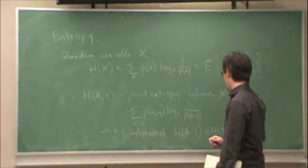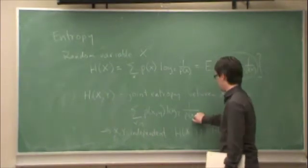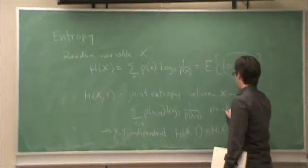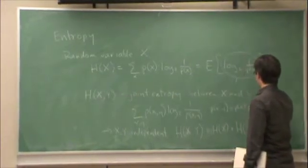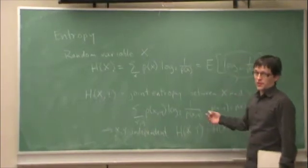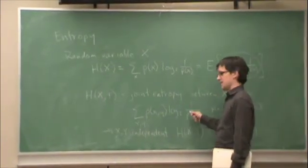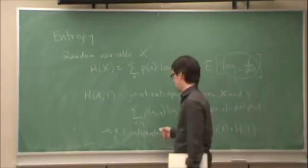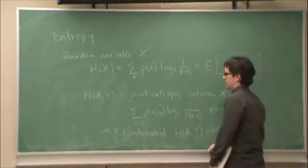So we showed that last time. It's not too hard to show yourself because p of x,y, remember, if they're independent, this is px, py. Log 2, 1 over px, py, that breaks up into log 2, 1 over px, plus log 2, 1 over py. And that will separate, the sum will separate into a term in H(X) and a term in H(Y).